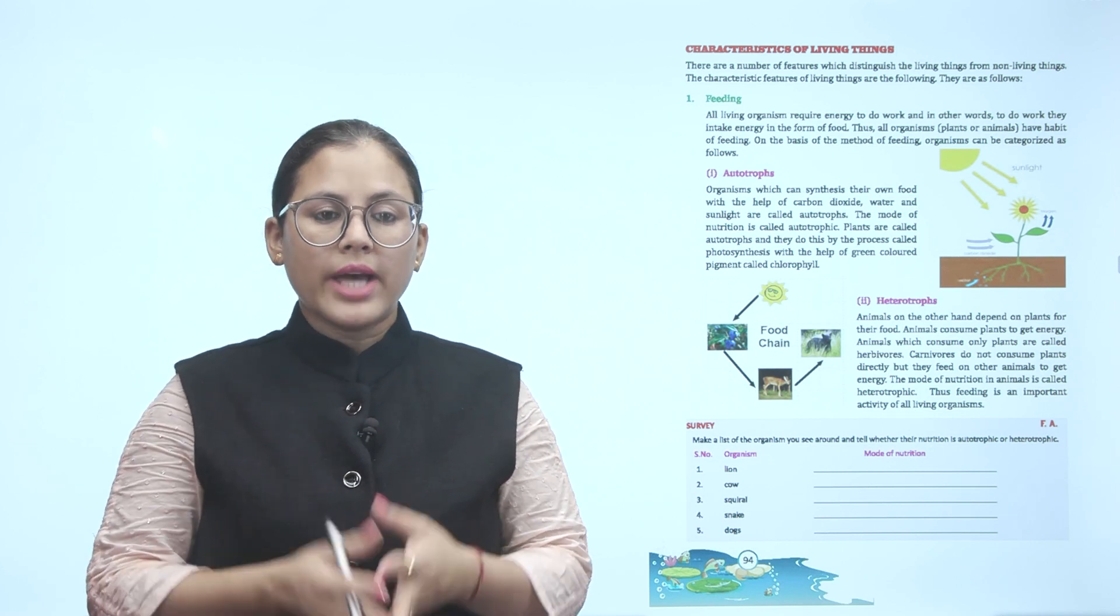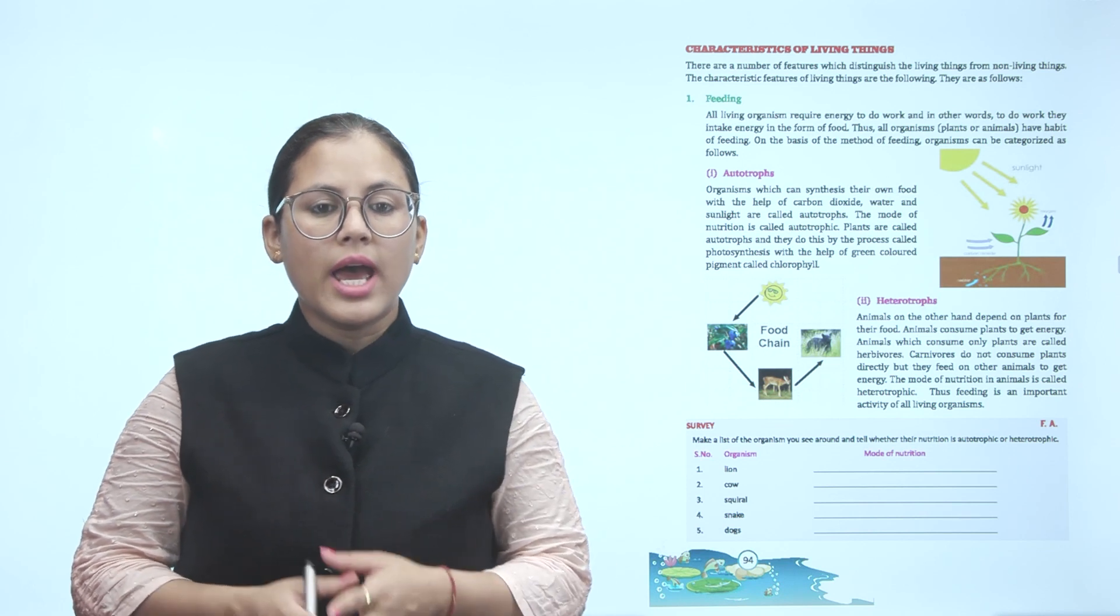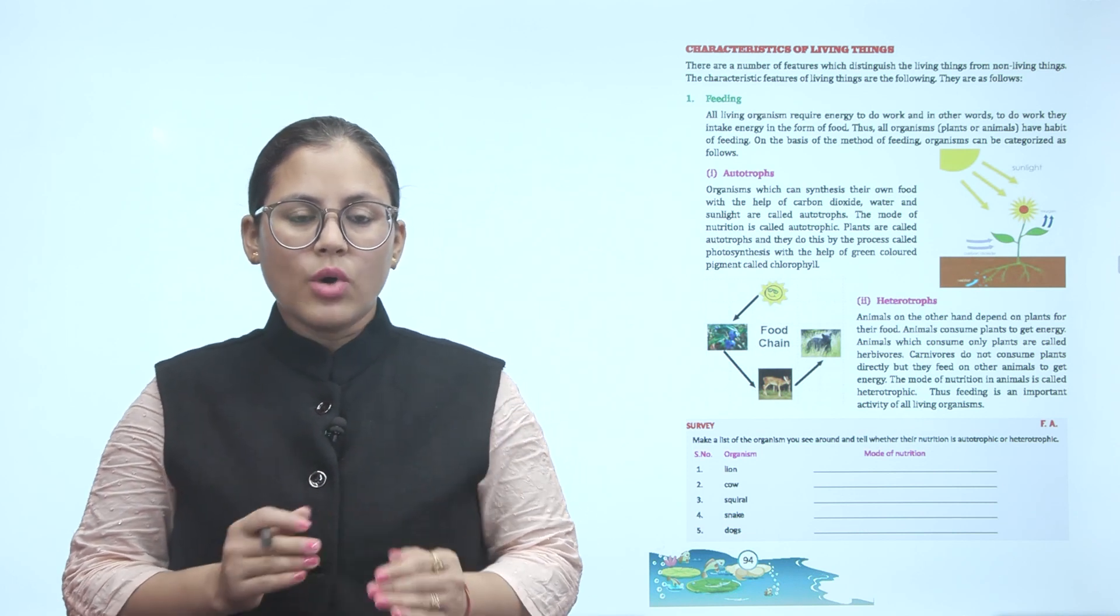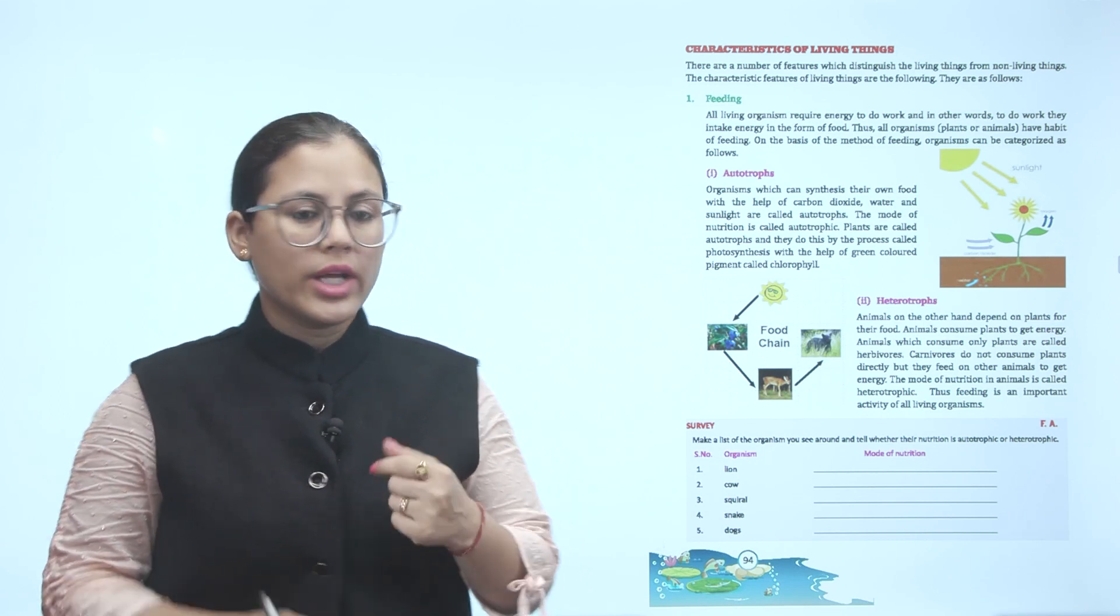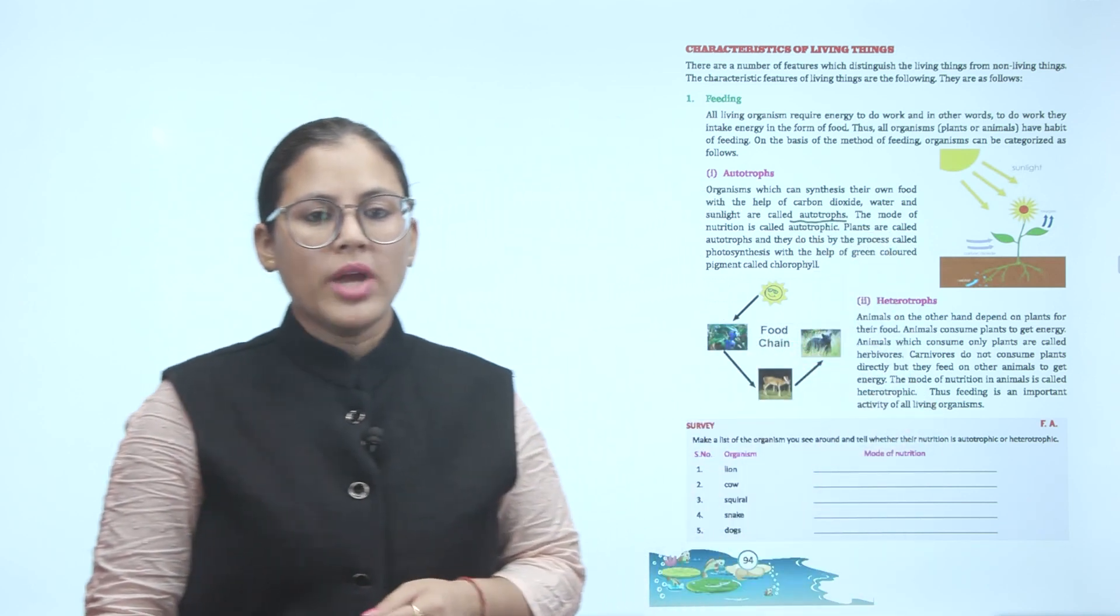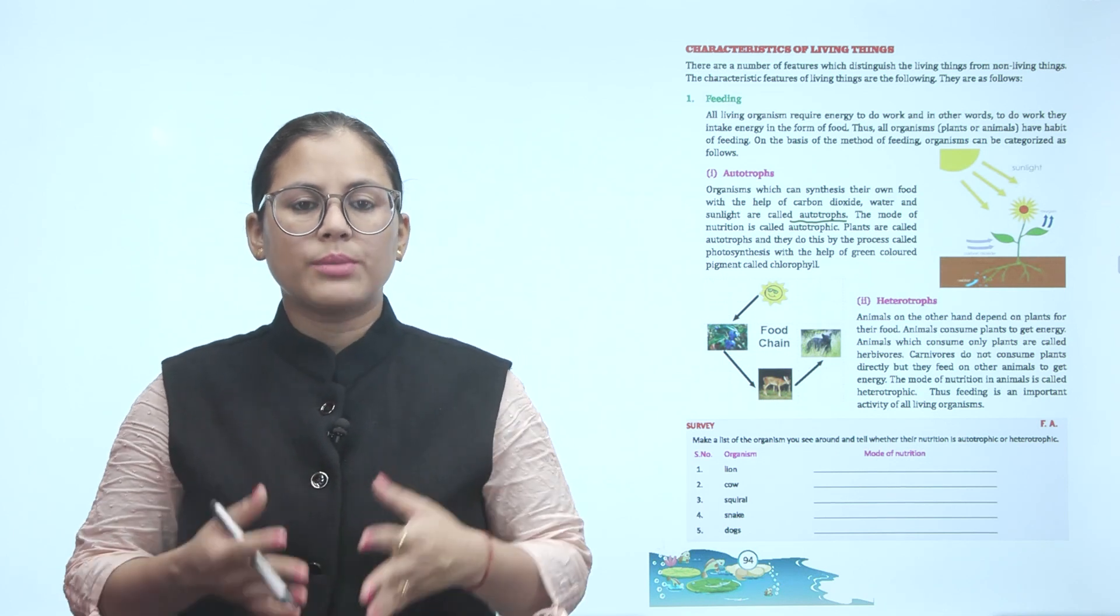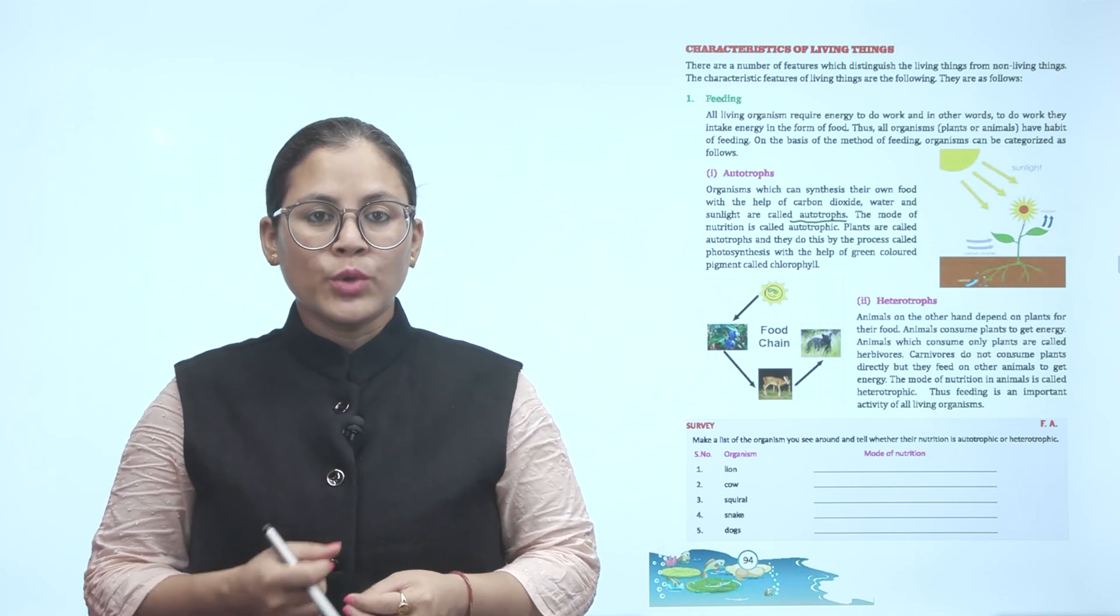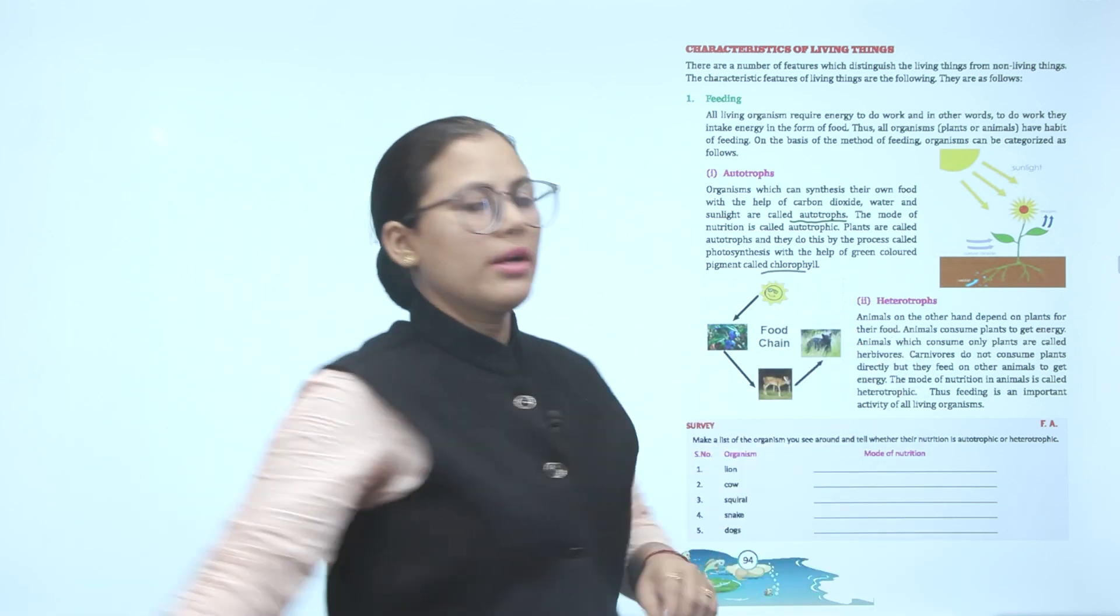Number one is autotrophs. Organisms which can synthesize their own food with the help of carbon dioxide, water and sunlight are called autotrophs. The mode of nutrition is called autotrophic. Organisms that synthesize their own food from raw materials are called autotrophs. Plants are called autotrophs and they do this by the process called photosynthesis with the help of green colored pigment called chlorophyll. Green plants are autotrophs because they have chlorophyll which helps them make their own food.